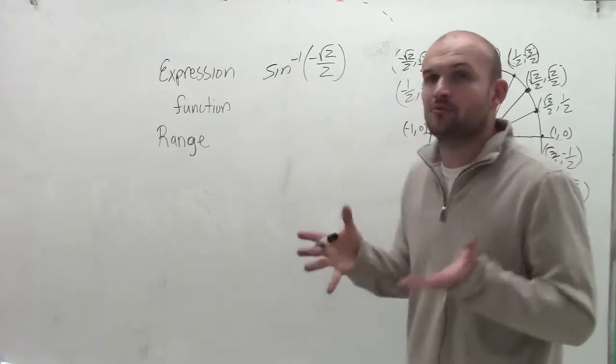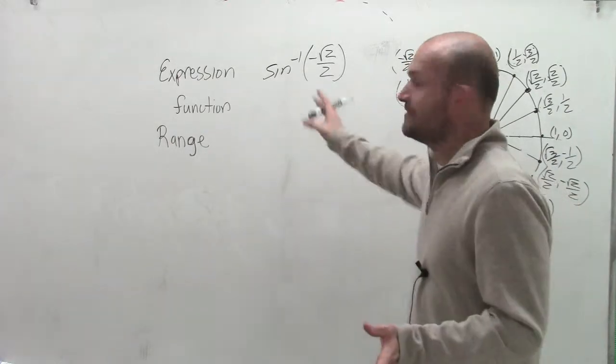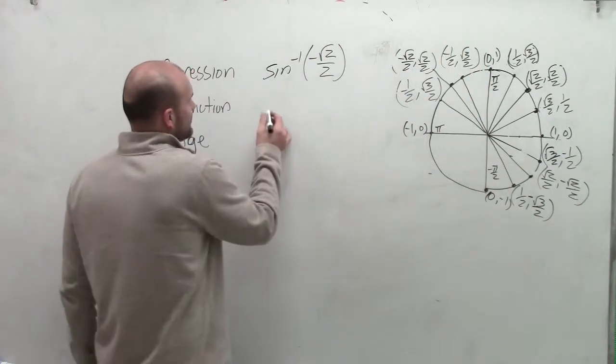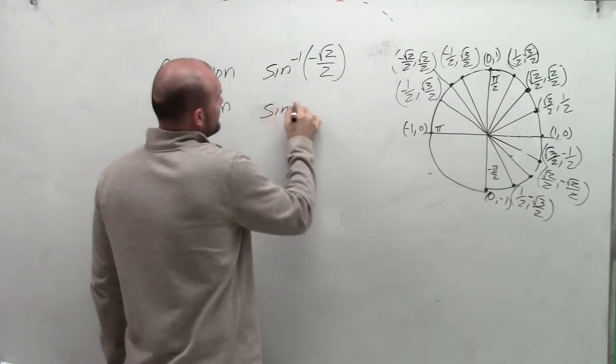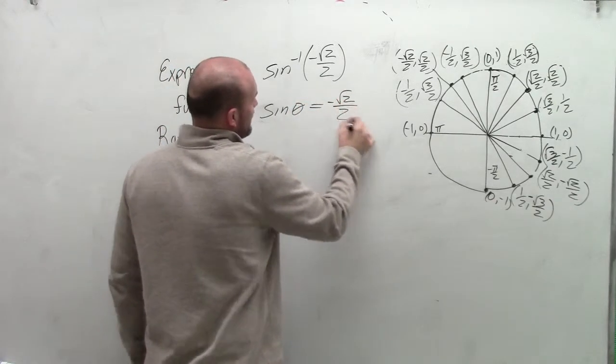And when doing this, I really like to make sure I write another notation for it without the inverse, and then also determine what the range is. So when writing it as a function, I can write it as the sine of theta is equal to negative square root of 2 divided by 2.